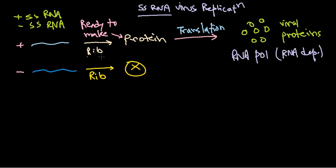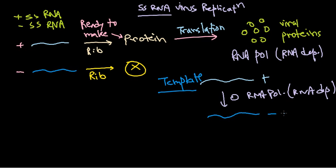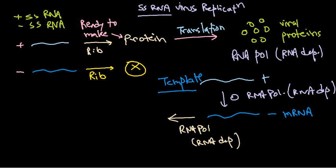Now, how can the mRNA be replicated or copied? We start with this positively-stranded mRNA. Using RNA-dependent RNA polymerase enzymes, we use the positive strand as a template to produce negatively-stranded mRNA. So the positive strand serves as the template, and from it we produce negatively-stranded mRNA.